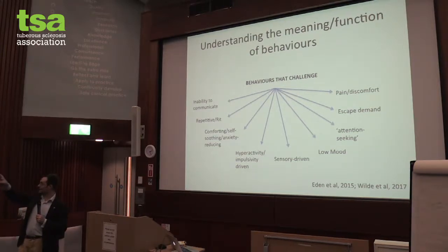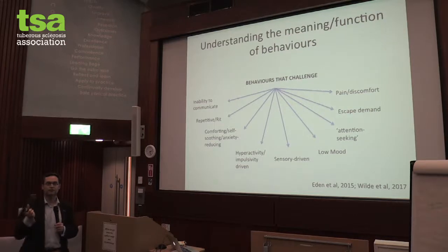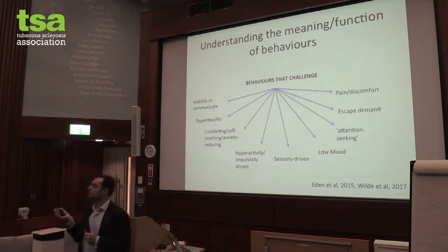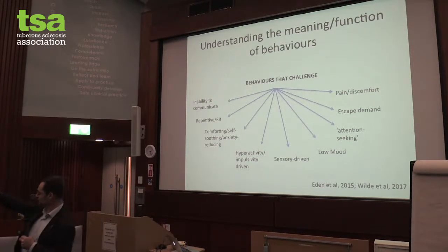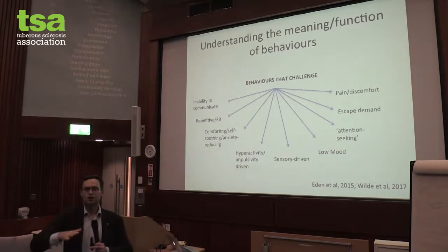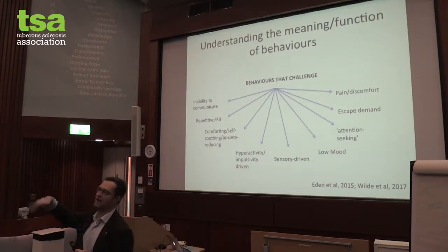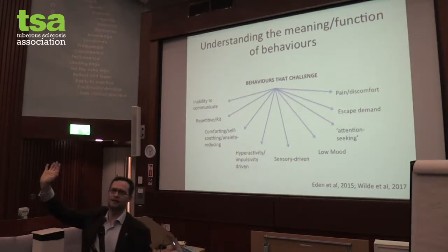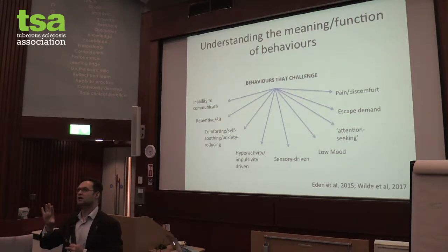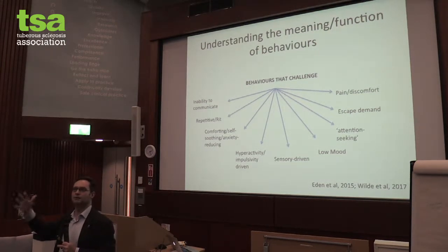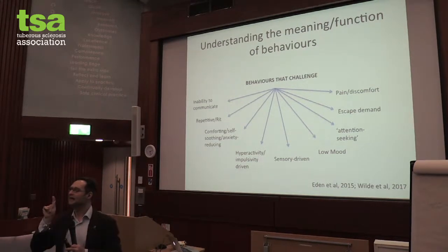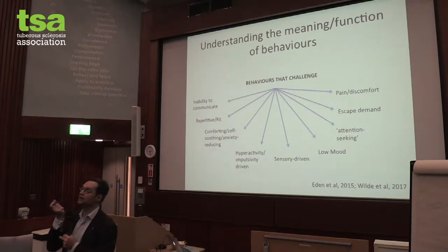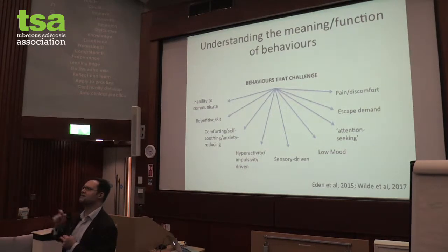Sensory-driven behaviour is another function. There can be obvious sensory stimuli such as a loud noise — loud noises, bangs, fireworks, sirens — that's undue sensitivity to typical noises, which we see a lot in people with autism and TSC. But particularly when you have TSC and autism, there's another unusual kind of sensory sensitivity. We call that an idiosyncratic response to specific sensory stimuli — when there are particular things that reliably lead to a response.